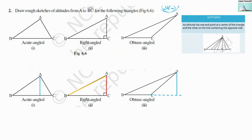Next question: draw rough sketches of altitudes from A to BC for the following triangles — acute angle, right angle, and obtuse angle triangles. For an acute angle triangle, altitude AE starts from vertex A and has its endpoint on BC at E. For a right angle triangle, the sides AB and BC themselves are the altitudes. For an obtuse angle triangle, we extend the line BC, and AE is the altitude, which lies in the exterior region of the triangle.